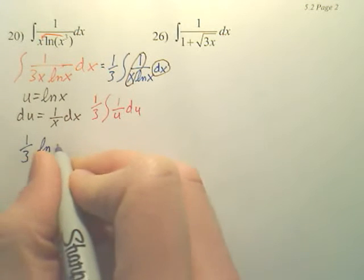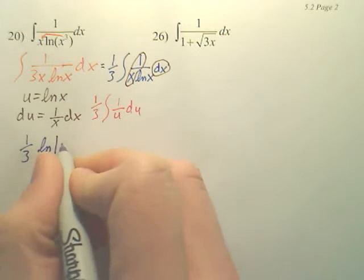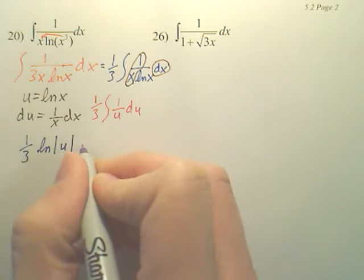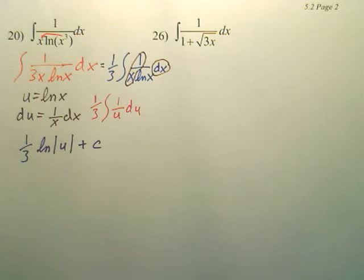out of the one-third, is ln absolute value u and plus c. Don't forget plus c.